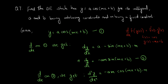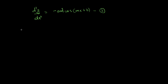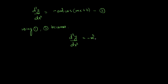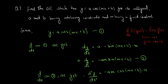From equation one we know that a·cos(mx + b) = y. Substituting a·cos(mx + b) with y in equation three, equation three becomes d²y/dx² = −m²·y. Rearranging, this gives d²y/dx² + m²y = 0. This is the required differential equation. It is of second order, both arbitrary constants a and b are eliminated, and m is a fixed constant that may remain. This is the solution to question 7.